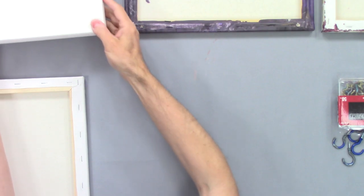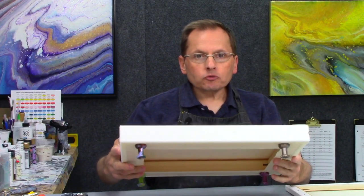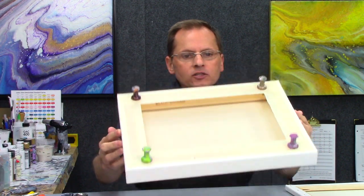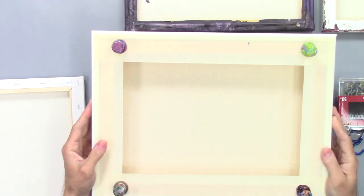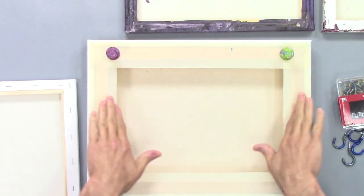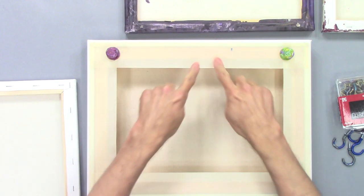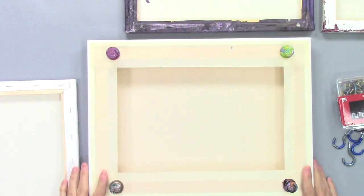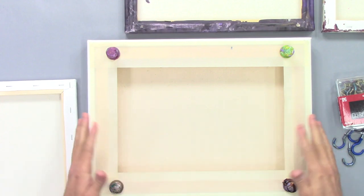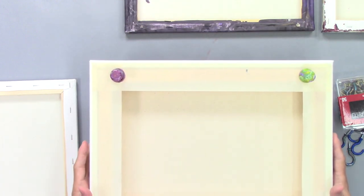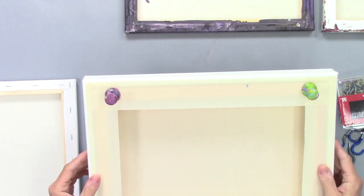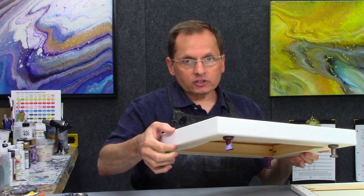The other type of canvas I pour on is a gallery wrap. This is a much more professional high-end canvas. This is a 12 by 16. This one I've already got prepped and it's ready to go. This one is called a gallery wrap because the canvas is tucked in to the stretcher bars and there's a spline back there. I kind of have it all covered up with tape but it's a much nicer canvas. These are generally what you'd want to see when you're selling your paintings. It's got the deeper one and a half inch profile.